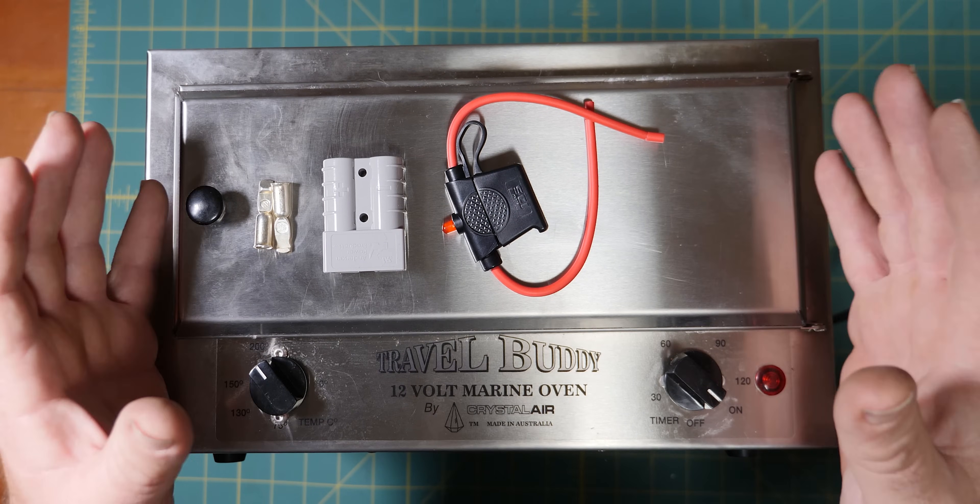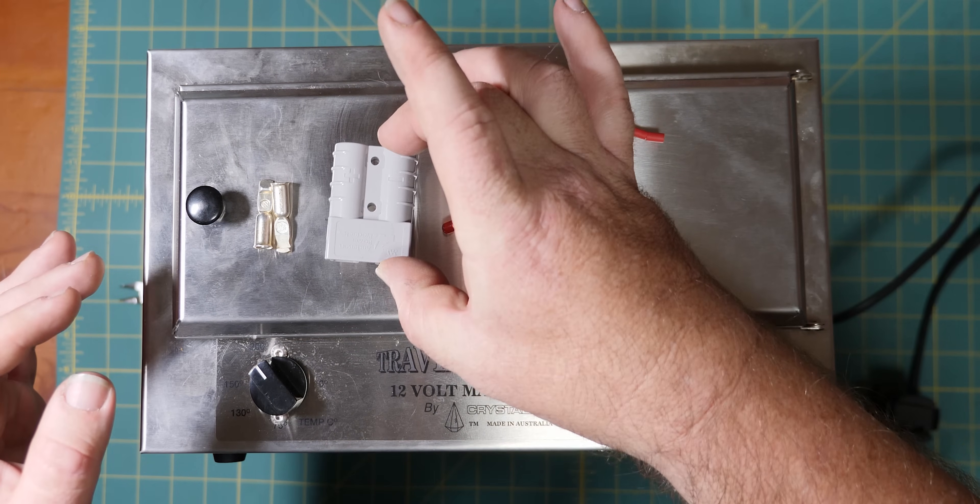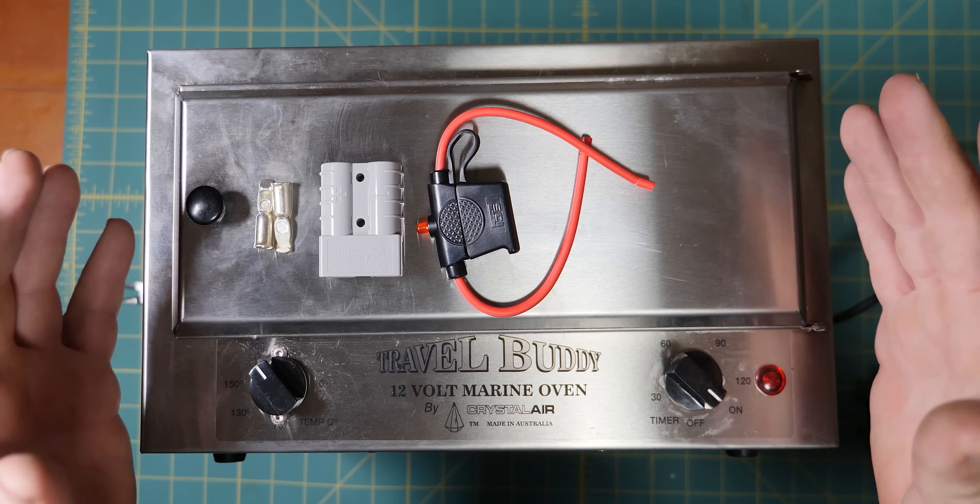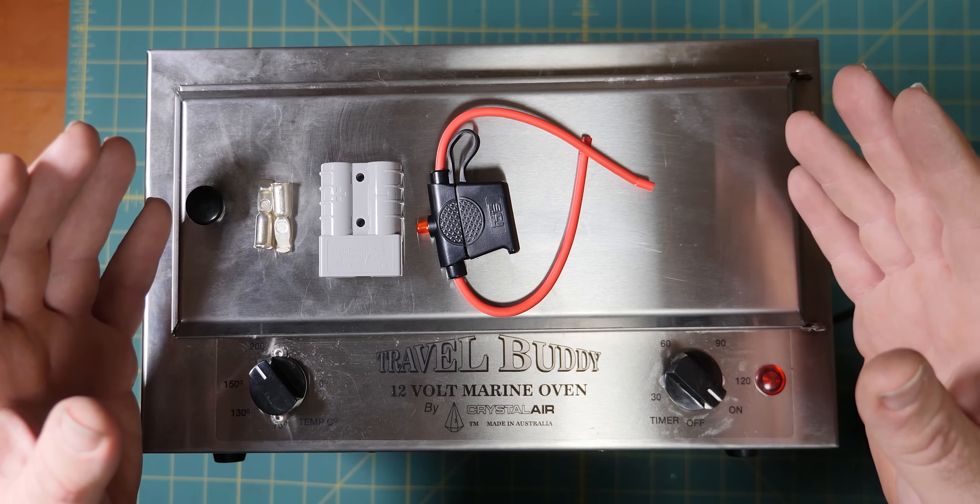G'day cobbers, welcome back to the bush. In this episode of Lock Your Hubs for All Driving, we'll be taking an Anderson plug, showing you how to wire that and also put a fuse in, and showing you how to join and splice wires properly so it's not going to fail for you out in the bush. So, let's get into it.